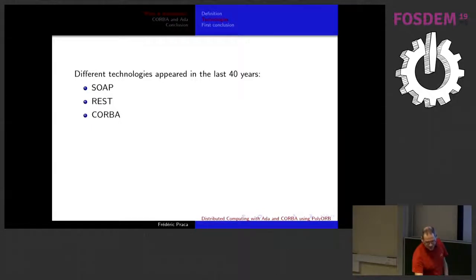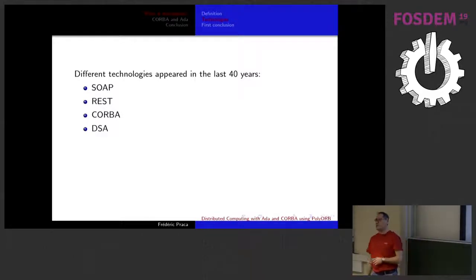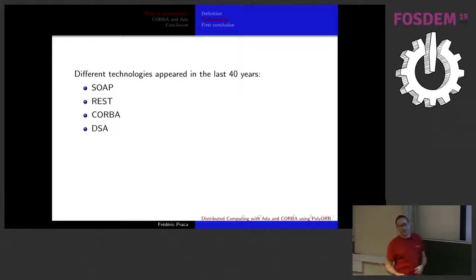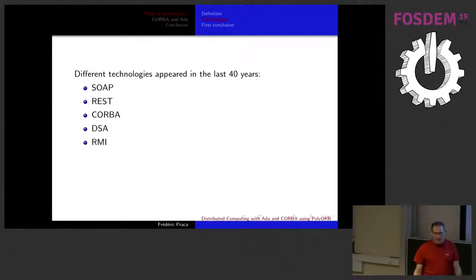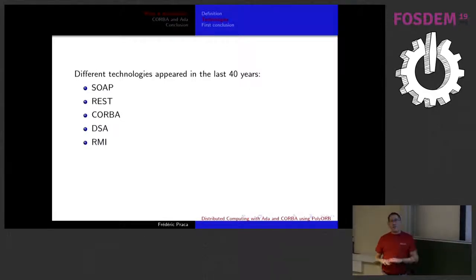CORBA — we will talk about this one later. And DSA. DSA is a Distributed System Annex, an annex for Ada which is a part of the standard. A compiler doesn't have to provide a DSA layer. But it's Ada only, and you won't be able to talk to other programs running something other than Ada. RMI — Remote Method Invocation — is a part for Java only, just like DSA was Ada only.